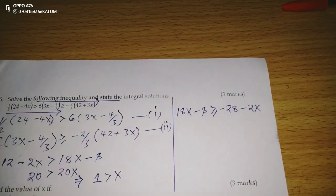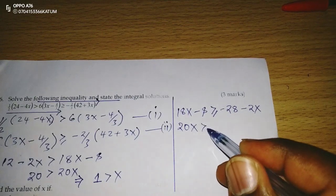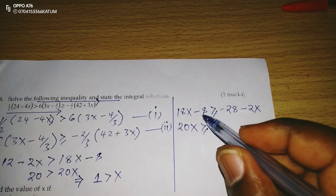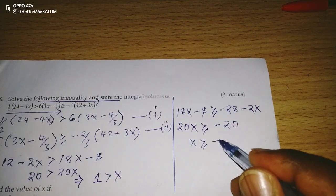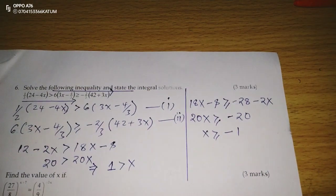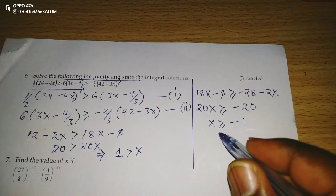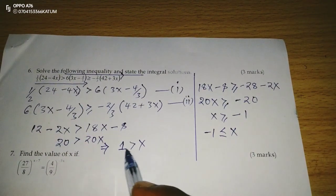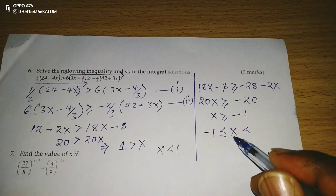Now we group like terms together. Negative 2x comes over to find 18x, giving 20x. Negative 8 goes to the other side to find negative 28, and negative 8 becomes positive, giving negative 20. So x is greater than or equal to negative 1. Rearranging: negative 1 is less than or equal to x. And since 1 is greater than x, we have x less than 1.